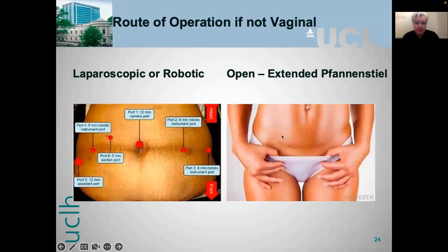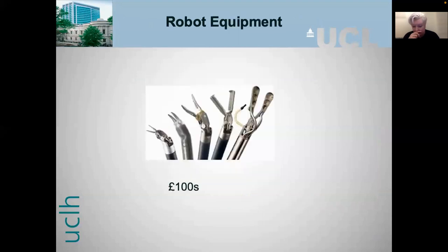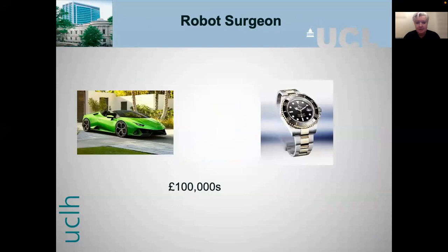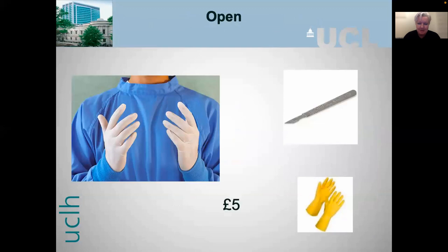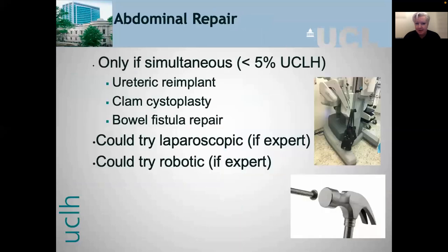With an open incision you can hide a nice scar under your pants, whereas with a robotic or laparoscopic repair you'd need a very large pair. Robots are expensive — almost two million pounds to buy and a hundred thousand a year to maintain, with hundreds or thousands in consumables per case, and robotic surgeons have fast cars — whereas open surgeons just need a scalpel and some gloves. On the serious side: you should only do an abdominal repair if you need to simultaneously do a ureteric re-implant, clam cystoplasty, or repair a bowel fistula.